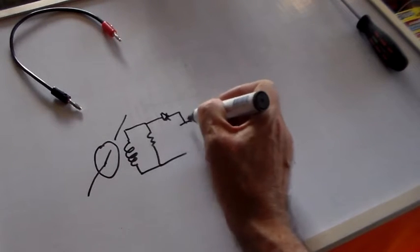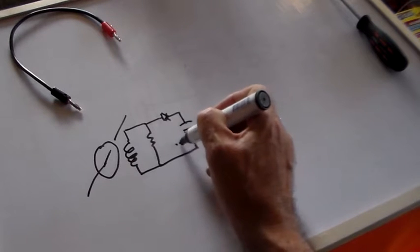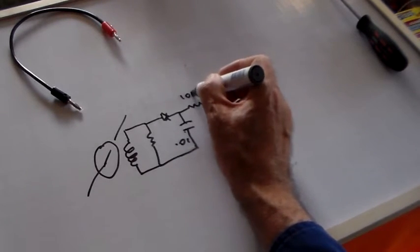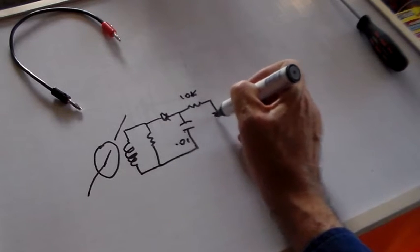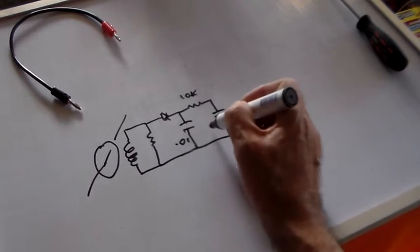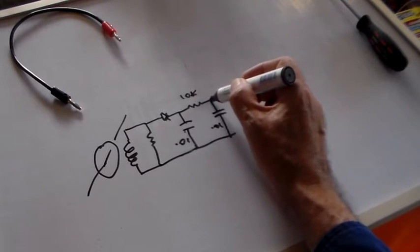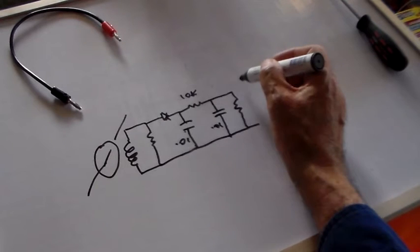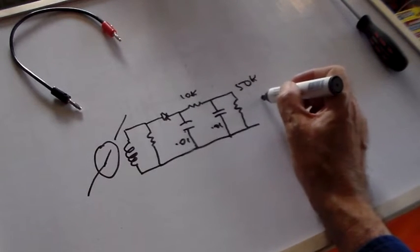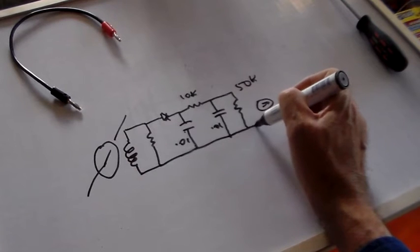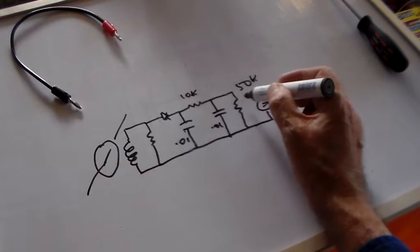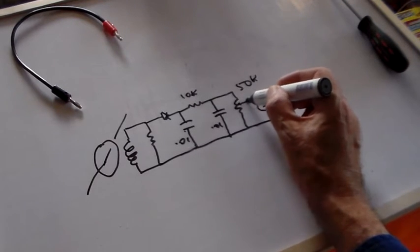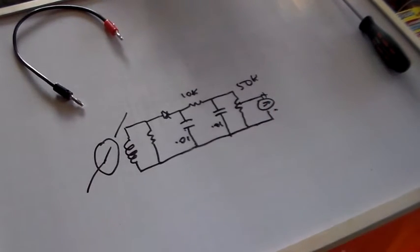There's a capacitor, 0.01, then there's a 10k, and there's another capacitor, 0.01. Then that goes to a 50k pot. I've got a meter there, like that. The negative of the meter there, the positive of the meter there, goes to the wiper of the pot.